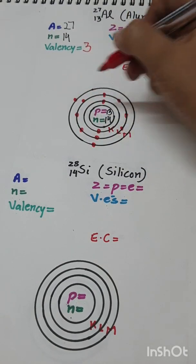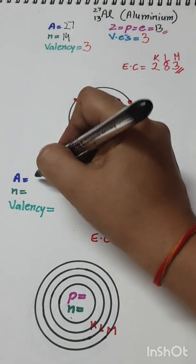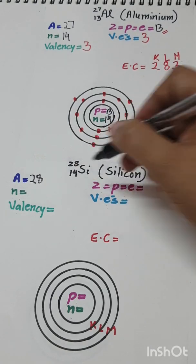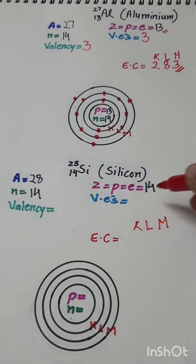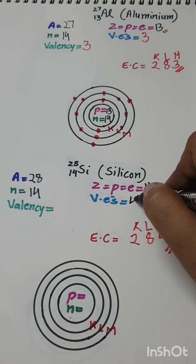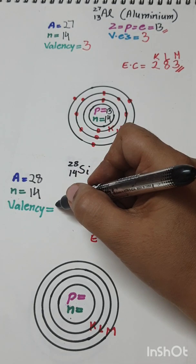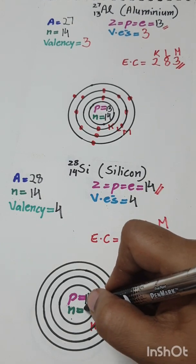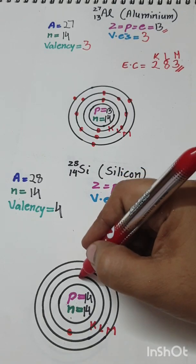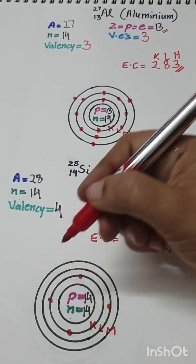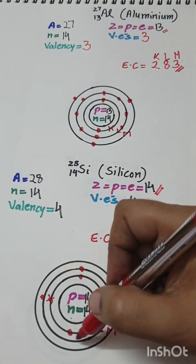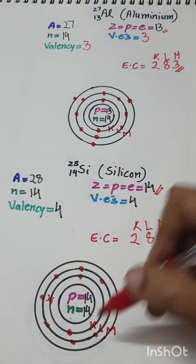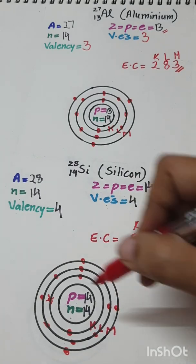Silicon: A = 28, Z = 14, n = 28 − 14 = 14. Electronic configuration — K shell: 2, L shell: 8, leaving 4 electrons for the M shell. EC is 2, 8, 4. The outermost M shell has 4 valence electrons, so valency = 8 − 4 = 4. Number of protons = 14, number of neutrons = 14.